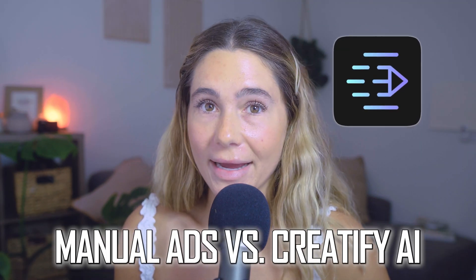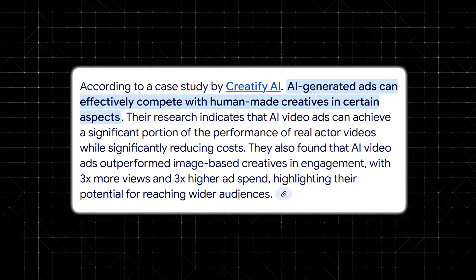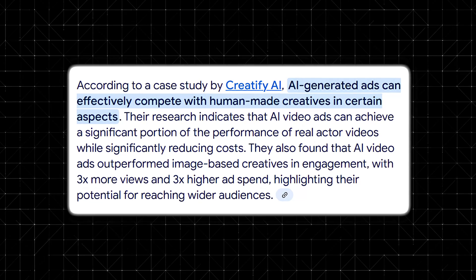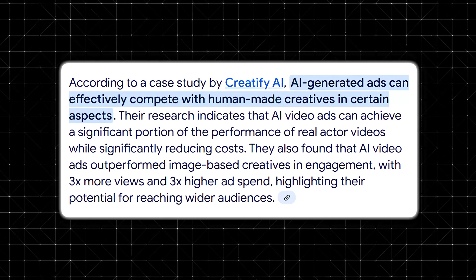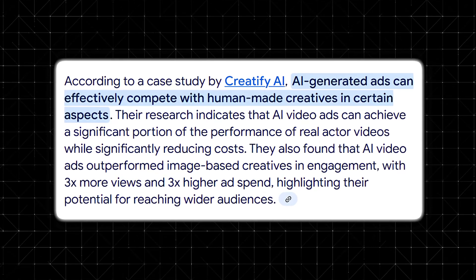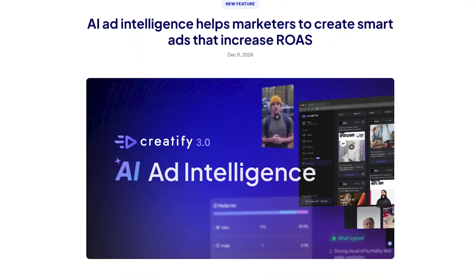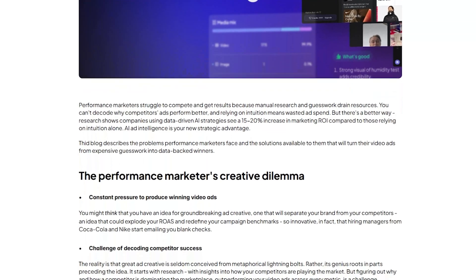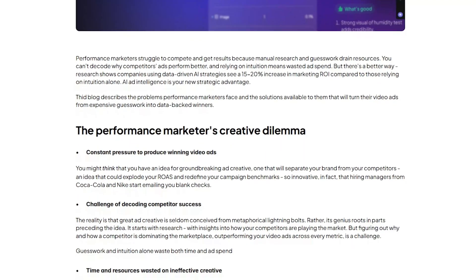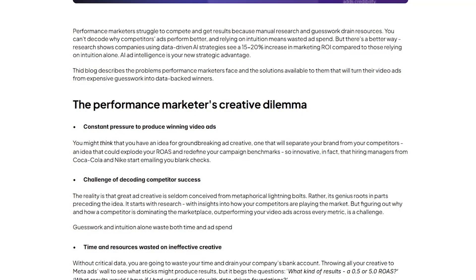So now let's dive into the question: manual ads versus Creatify AI — which actually gets more clicks? This is such a common question, and according to a case study published by Creatify, the answer is yes, and the numbers are solid. In their experiment, AI-generated ads had 28% lower cost per result and 31% lower cost per click compared to the best manually created UGC ad. That doesn't mean manual ads are dead, but it does show that Creatify can keep up with and sometimes outperform traditional content, especially when you're testing lots of variations quickly or need content fast.